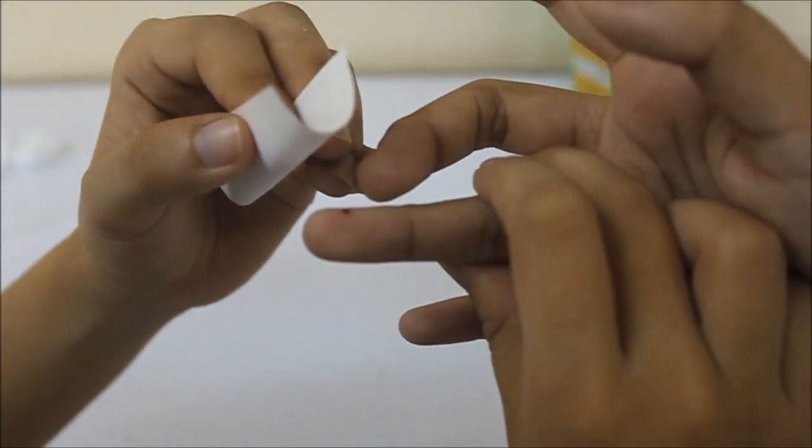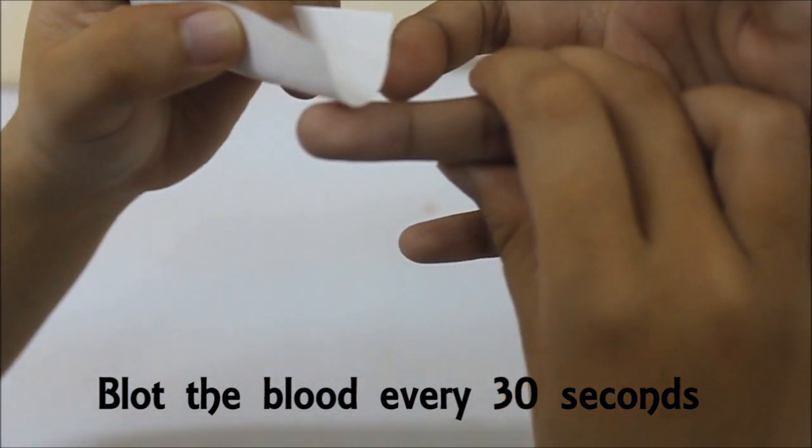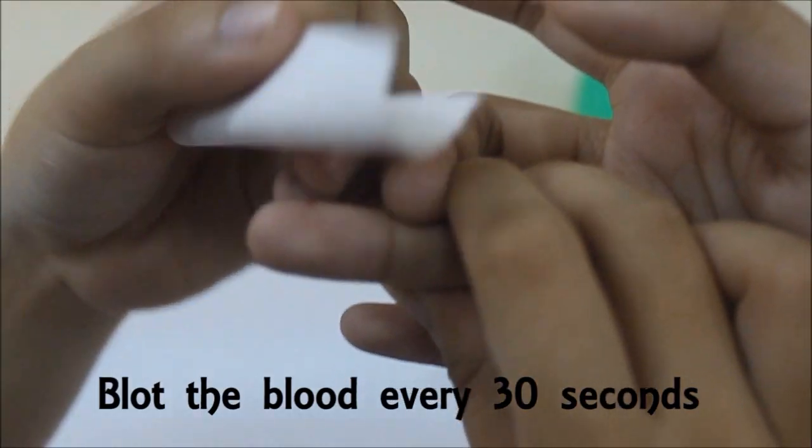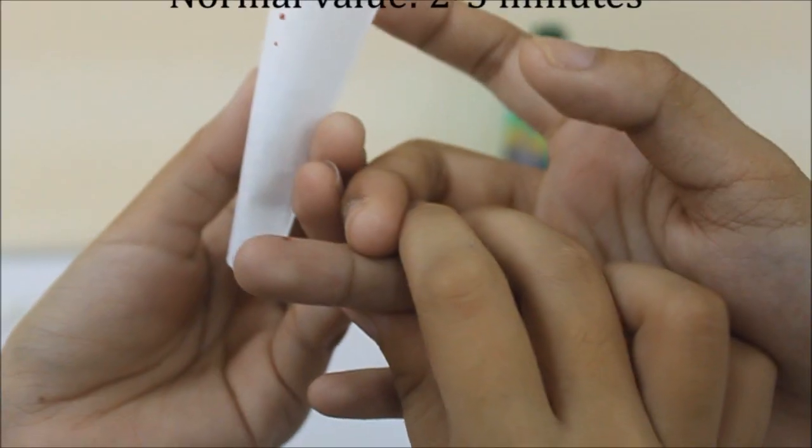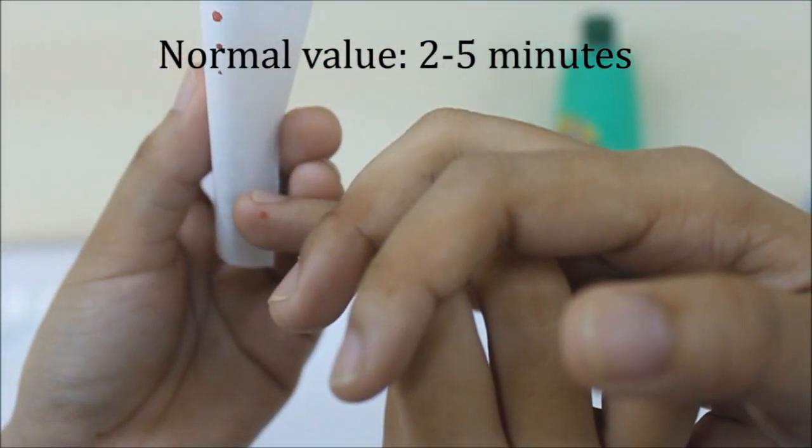Do not wipe the first drop of blood. Blot the blood with the filter paper every 30 seconds by lightly touching the edge of the blood drop. Stop the watch when the blood is no longer absorbed into the filter paper. The normal value for the Duke's method is 2 to 5 minutes.